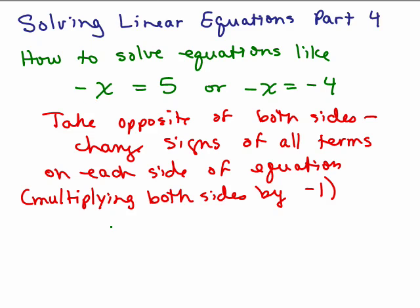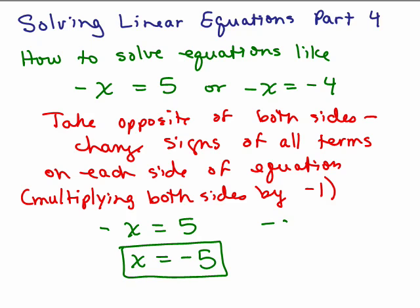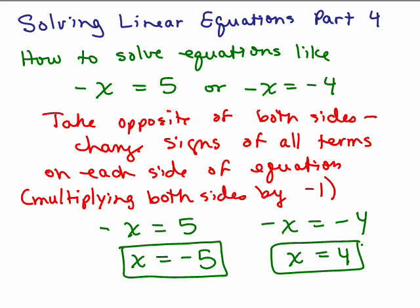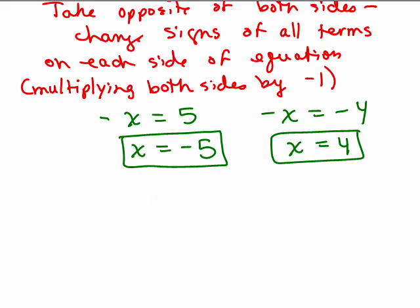Negative x equals 5 is equivalent to just writing x equals negative 5. So that would be the answer. And if you had negative x equals negative 4, that's the same thing as x equals 4, and now you've solved for x. Think about it — the opposite of what number is 5? The opposite of negative 5 would be 5, so that's why x is negative 5. This is saying the opposite of what is negative 4? Well, the opposite of 4 is negative 4.